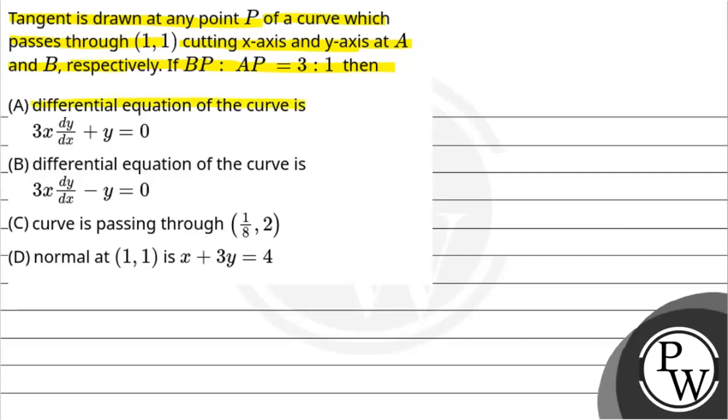Option A: differential equation of the curve is 3x dy/dx plus y equals 0. Option B: 3x dy/dx minus y equals 0. Option C: curve is passing through (1/8, 2). Option D: normal at (1,1) is x plus 3y equals 4.